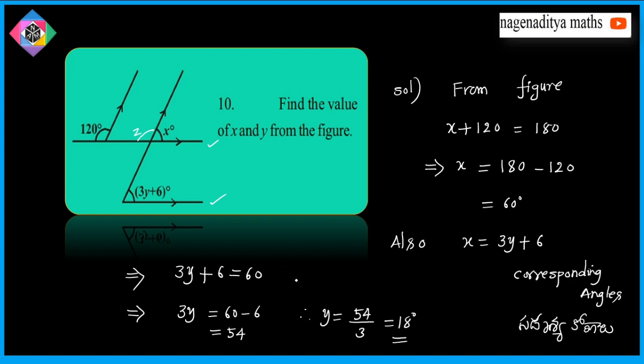3Y plus 6 is equal to 60, so 3Y equals 60 minus 6, that is 54. Therefore Y is equal to 54 divided by 3, that is equal to 18 degrees. Thank you.